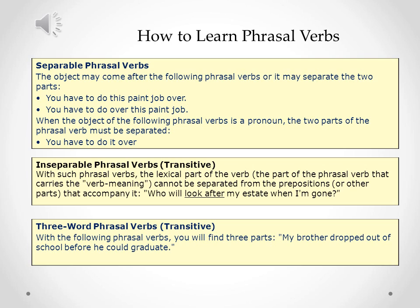The third type of phrasal verbs is three-word phrasal verbs, and we use transitive verbs in this type. With these phrasal verbs, you will find three parts. For example: 'My brother dropped out of school before he could graduate.' Here we have the verb 'dropped,' plus 'out' as a preposition, plus another preposition 'of.' The whole phrasal verb consists of three words, and that's why we call them three-word phrasal verbs.